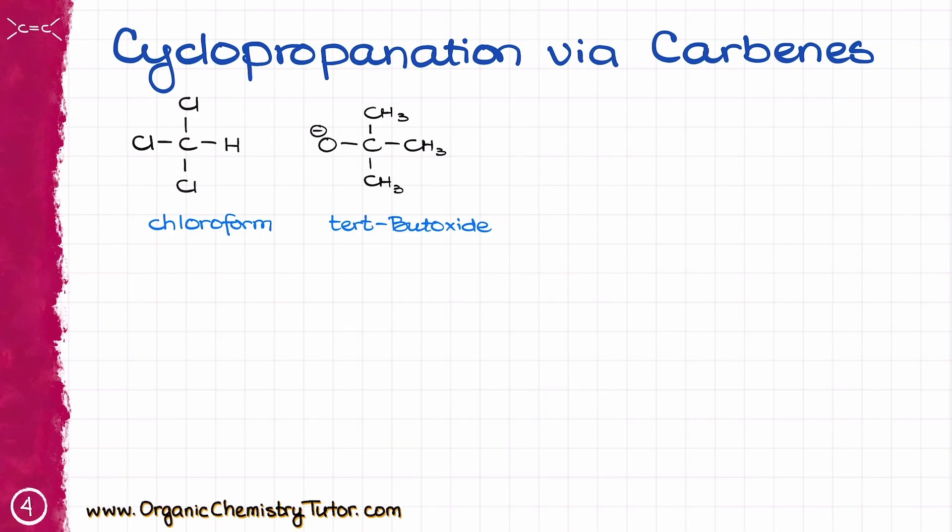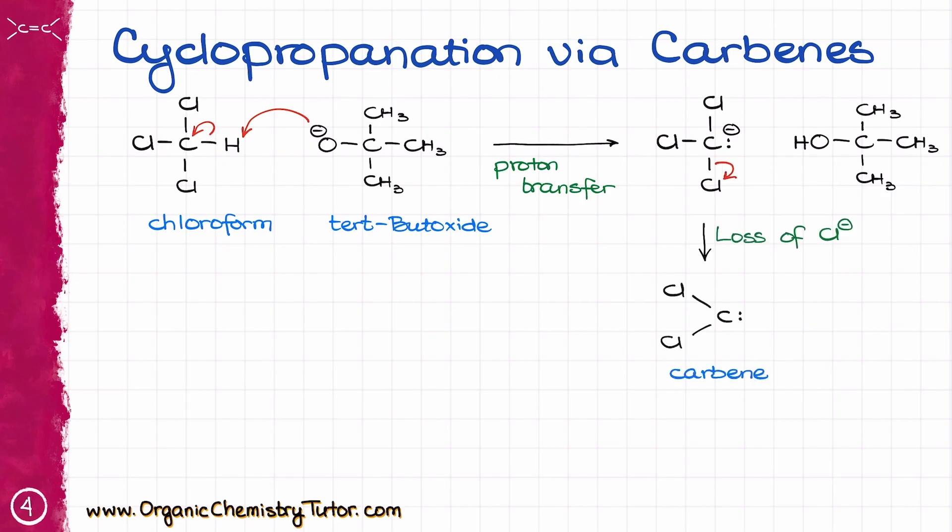And the first step in this reaction will be a simple acid-base proton transfer, simple acid-base reaction, in which the tert-butoxide pulls off the proton from chloroform, making an anionic species looking like this. Next, the chloroform anion that I have just formed is going to lose a chloride anion, giving me a carbene.